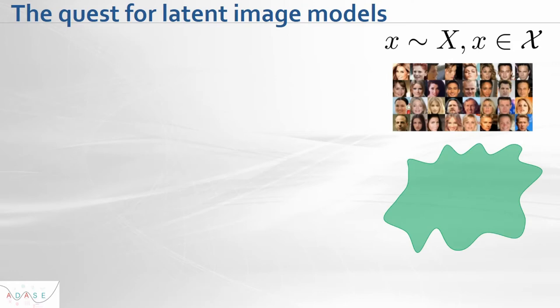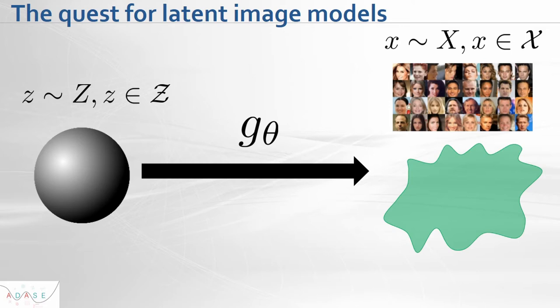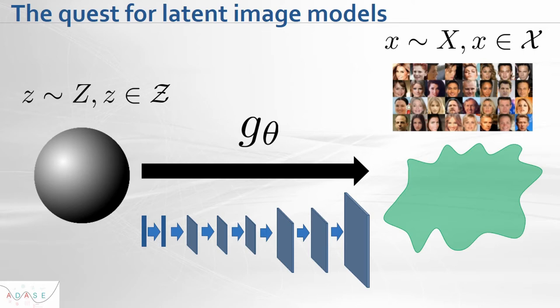So why do we need latent models? Why do we need generative models? We have some latent space Z — say, a sphere in some Euclidean space — and we construct a mapping from that space to the space of images, realized by a neural network parameterized by the vector of parameters theta. This mapping is given by a convolutional neural network, which is a sequence of linear and non-linear transformations with filters.